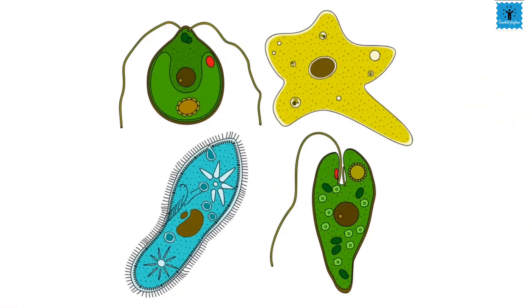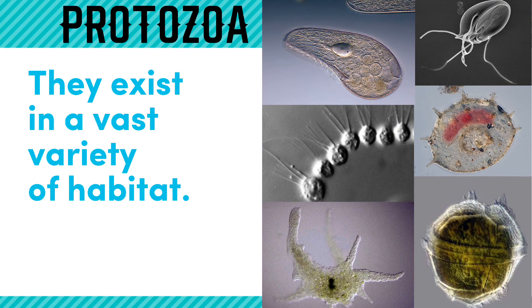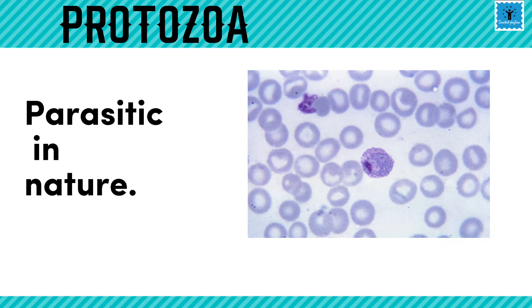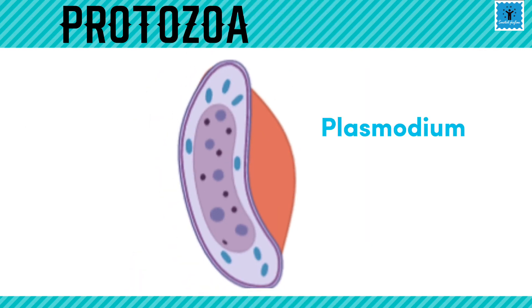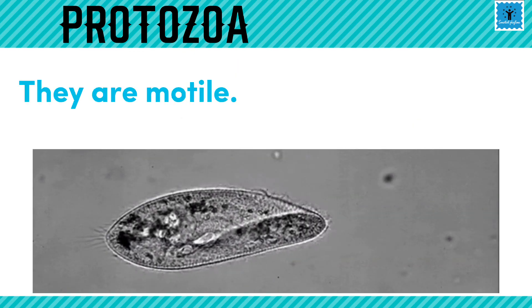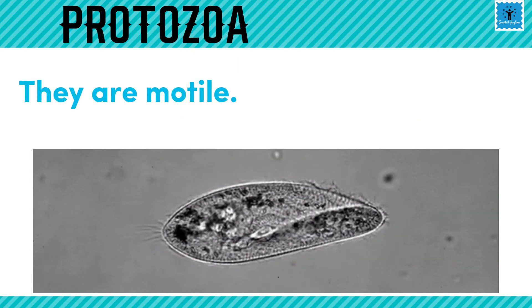Another category of microorganisms is protozoa. Protozoa are single-celled organisms that come in many shapes and sizes. They live in a vast variety of moist habitats including fresh water, marine environments, and soil. They are parasitic in nature, meaning they live in other plants and animals including humans, where they cause diseases — for example, malaria is caused by Plasmodium. They are motile, meaning they can move from one place to another.